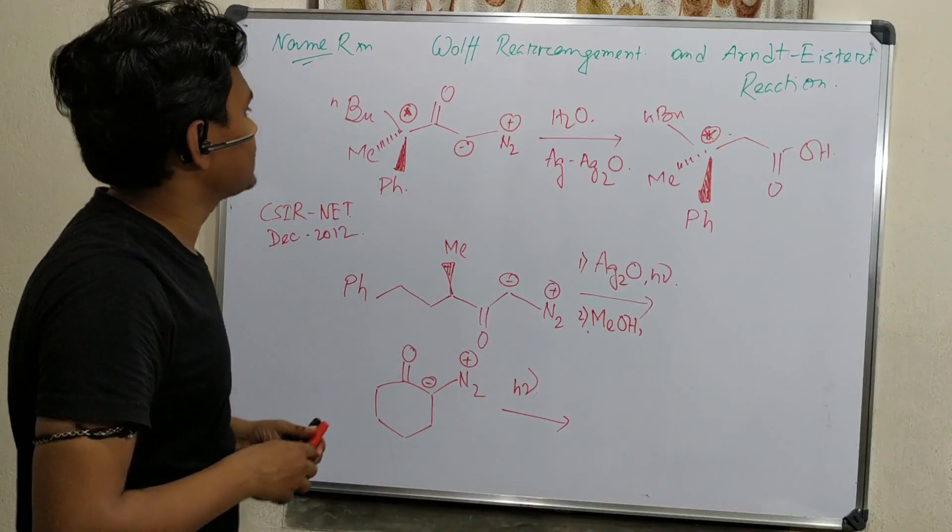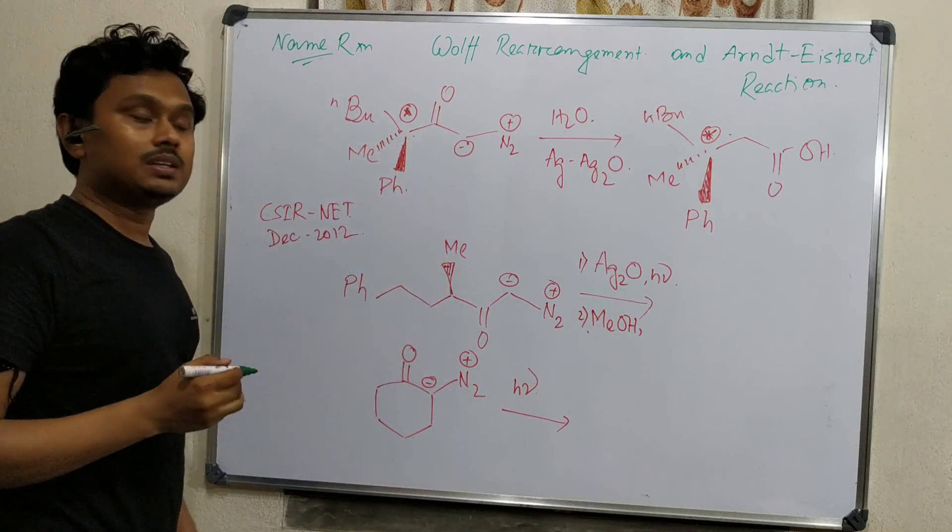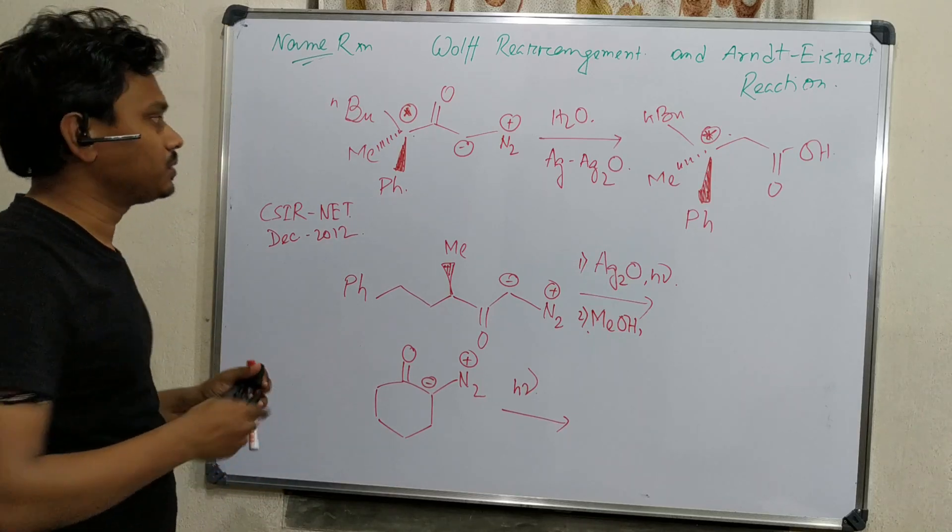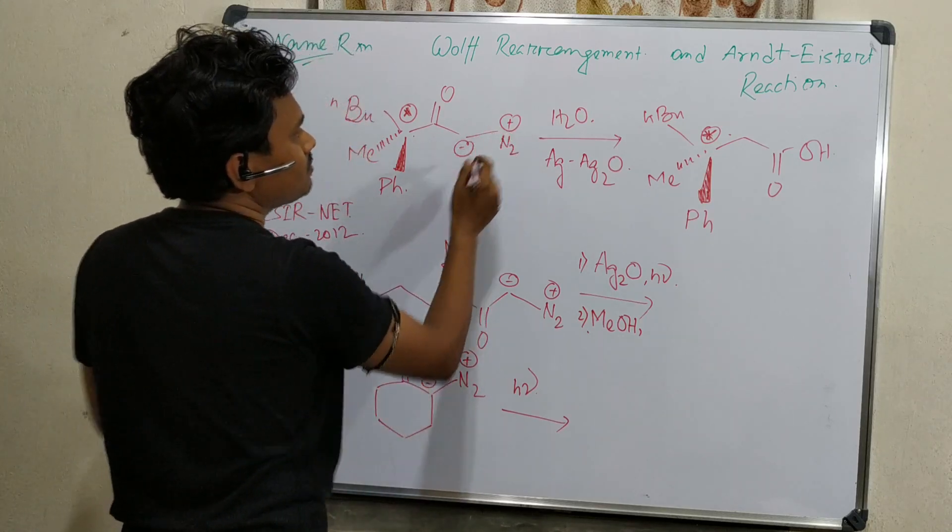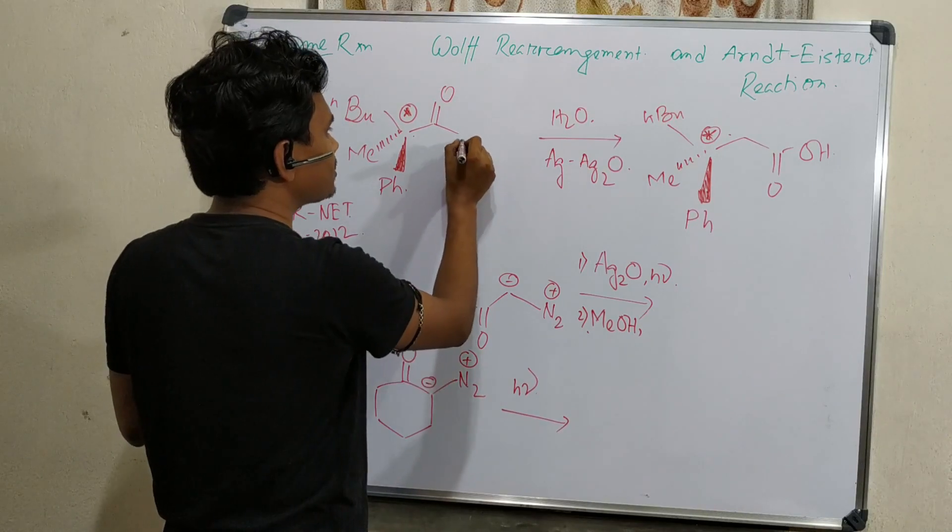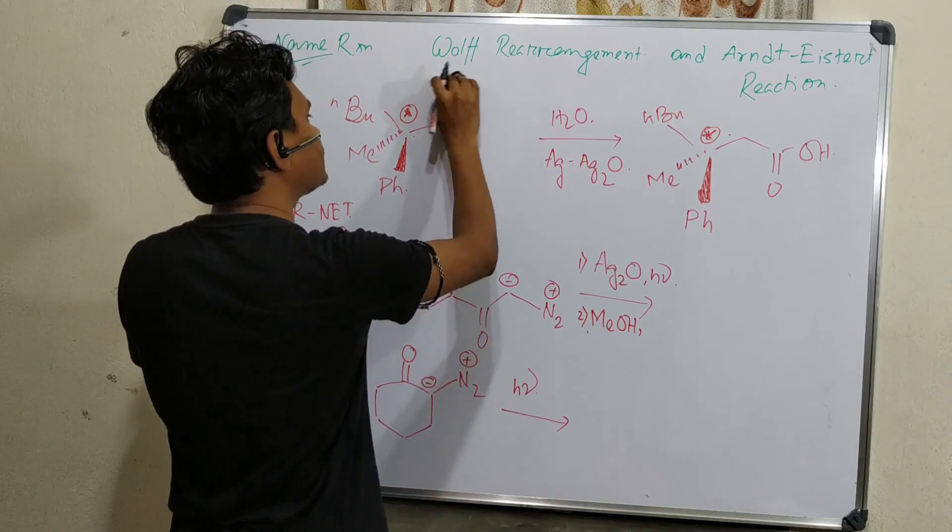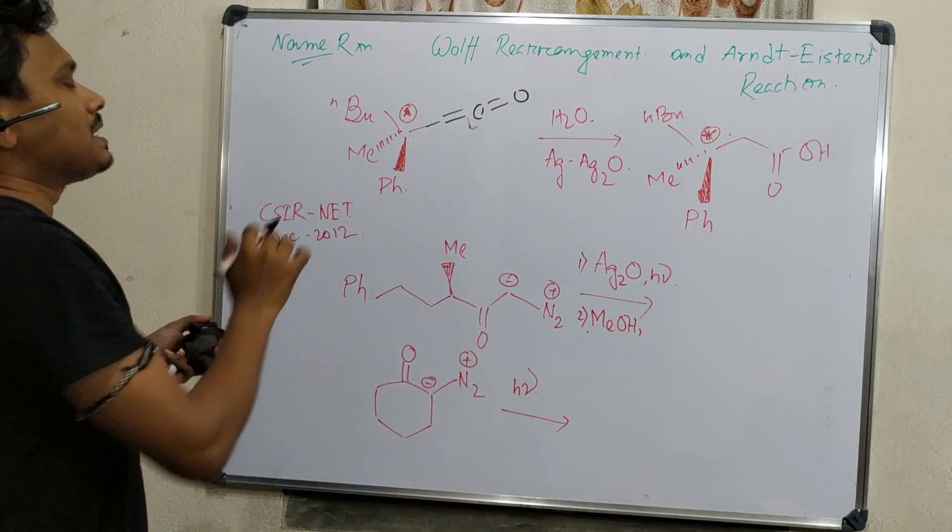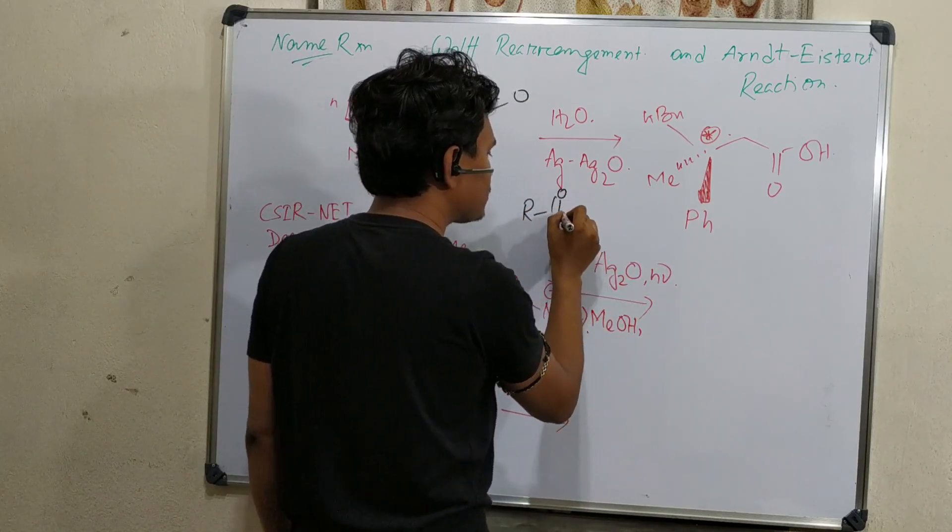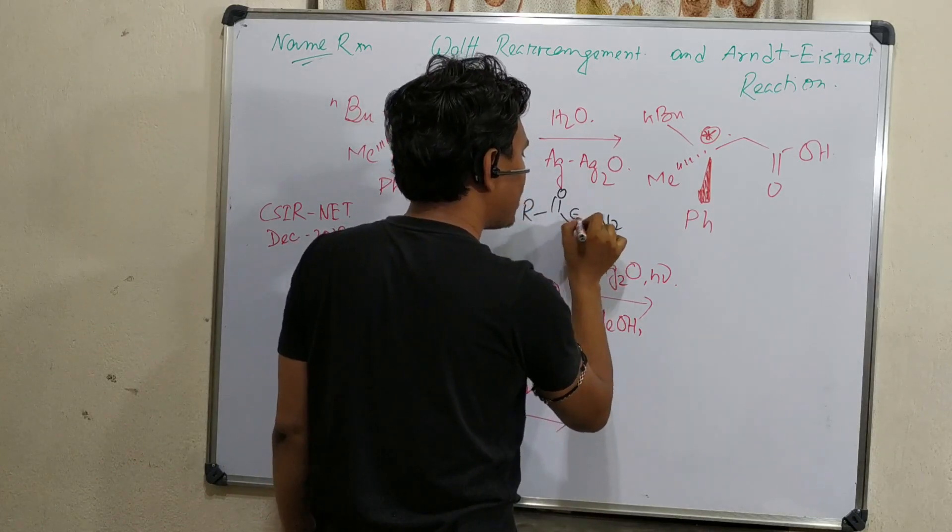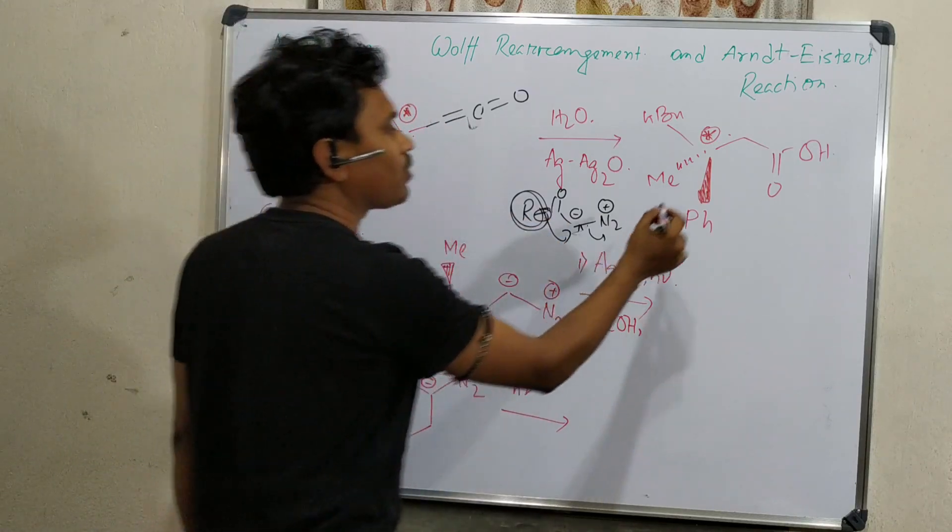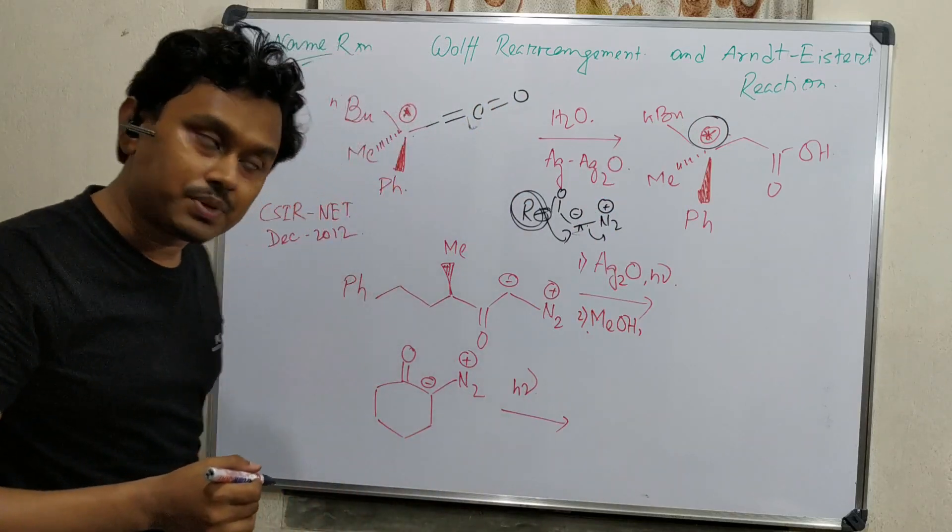I shall discuss these three examples. First example is actually the optically active center. In my previous video, I have explained that Wolff rearrangement proceeds through retention in configuration during the migration of the alkyl group. Here, when this nitrogen will be eliminated, it will produce that ketene. It will eliminate in terms of silver oxide and produce a ketene intermediate. First it's a carbene. After that, double bond O. This is obtained by the migration. These are CO, this migrates with this bond pair. That's why the retention in configuration, means the asymmetry is preserved.